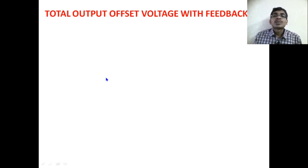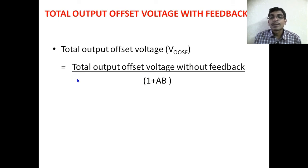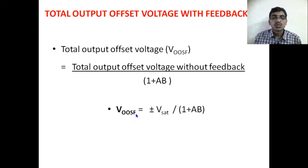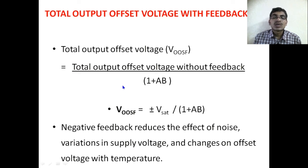Finally, the total output offset voltage with feedback is equal to (±V_saturation) / (1 + A·β). Negative feedback reduces the effect of noise, variation in supply voltage, change in offset voltage with temperature, and similar disturbances. These are the advantages of using feedback in an operational amplifier.